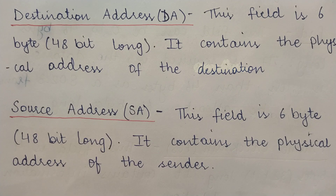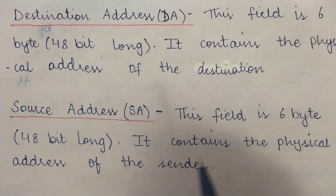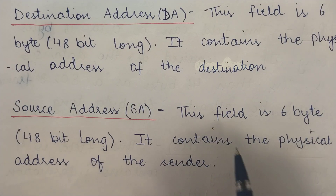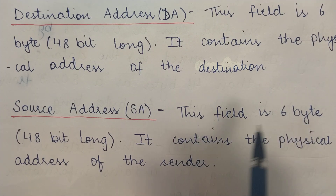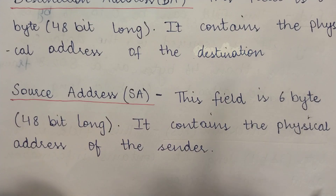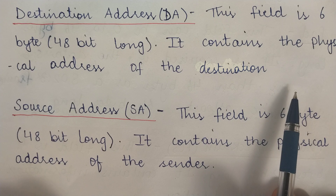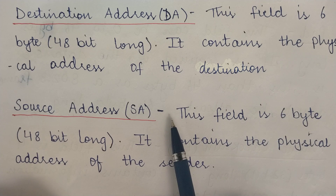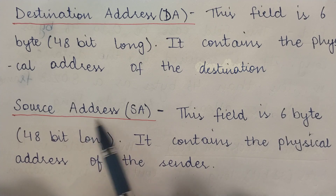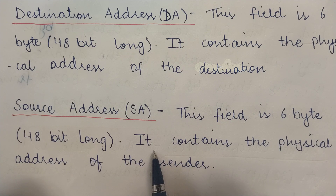The fourth field is the source address (SA), also 6 bytes (48 bits) long — the same size as the destination address field. It contains the physical address of the sender, identifying the node that initiated and transmitted that particular frame.